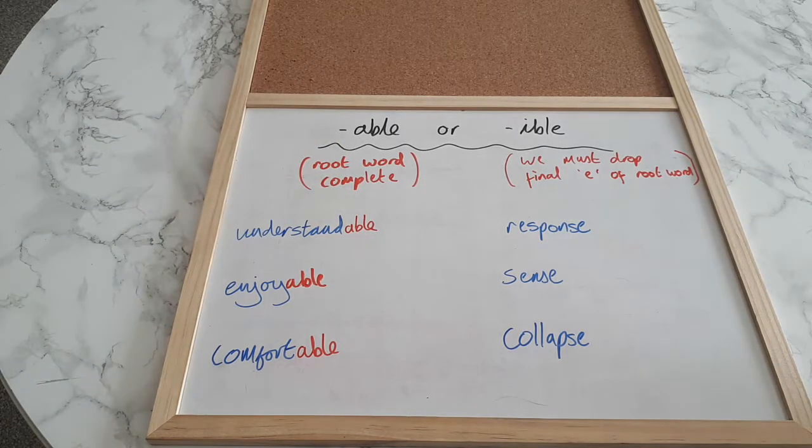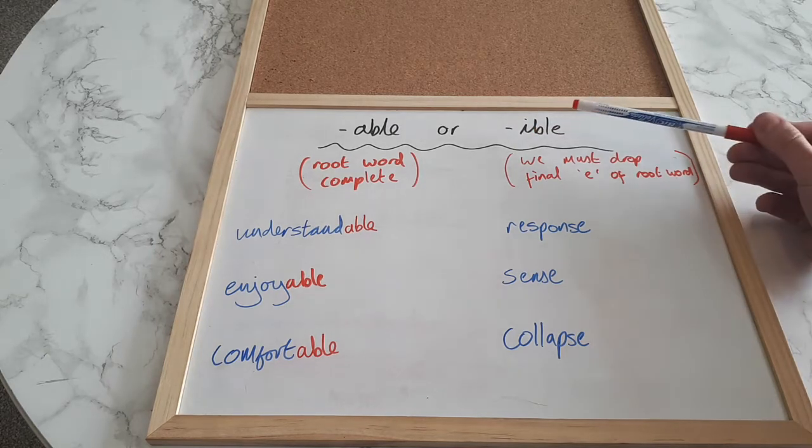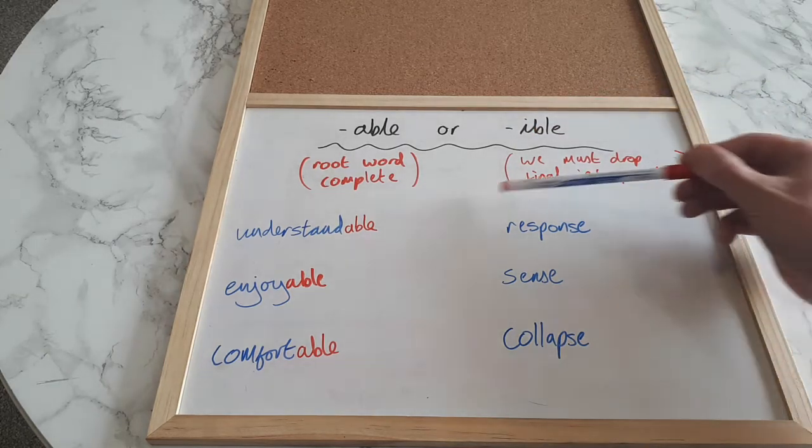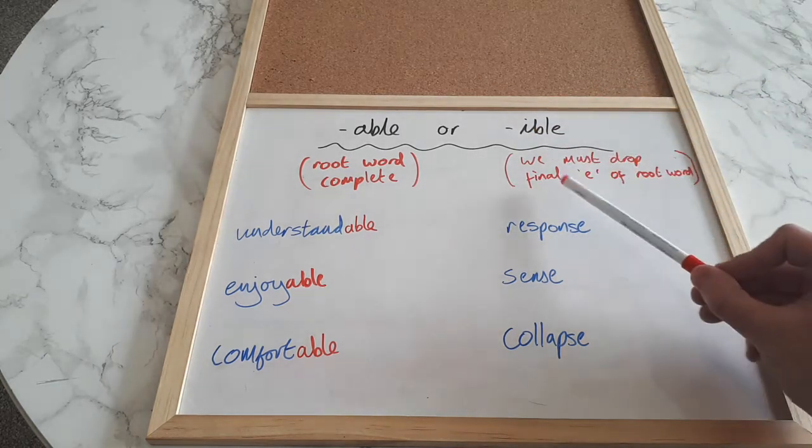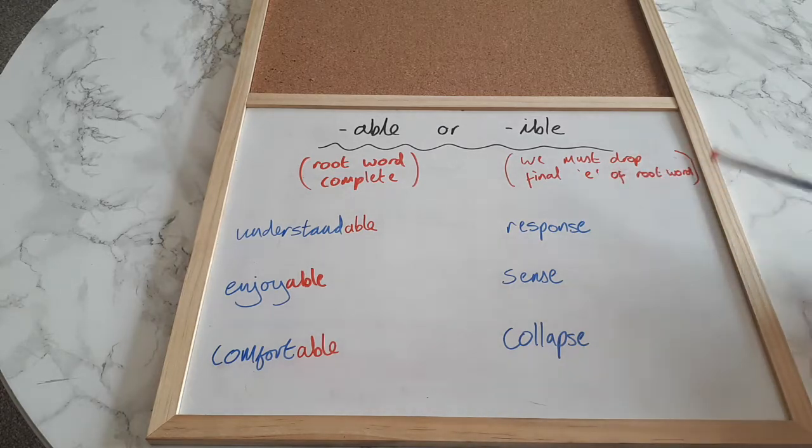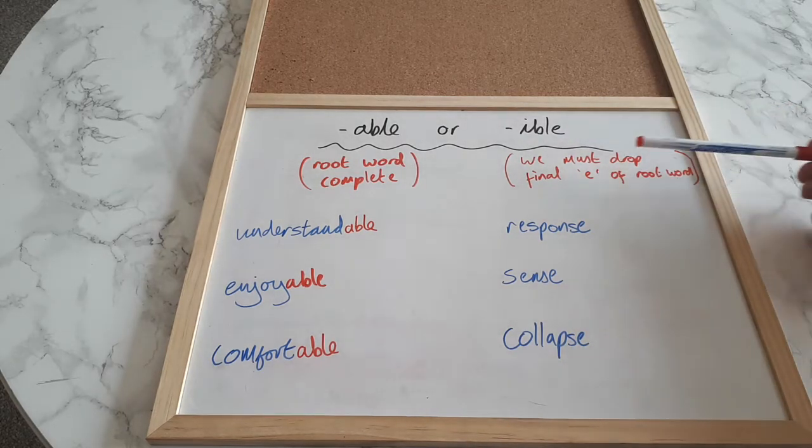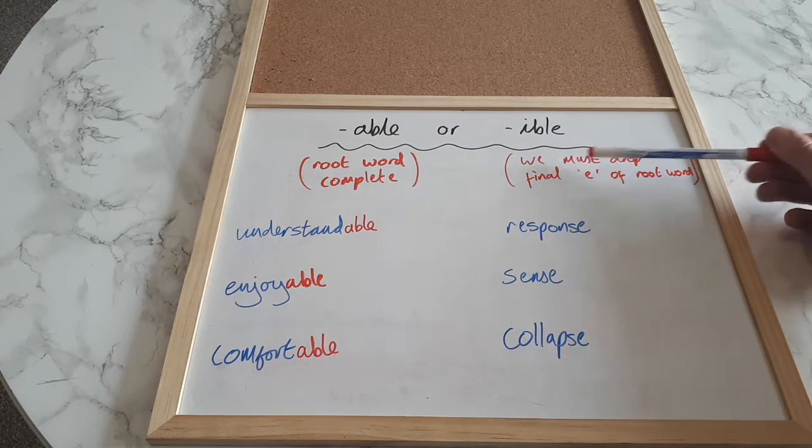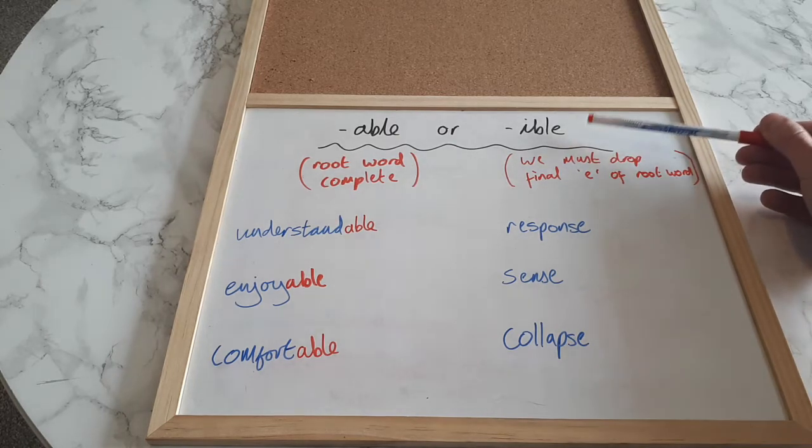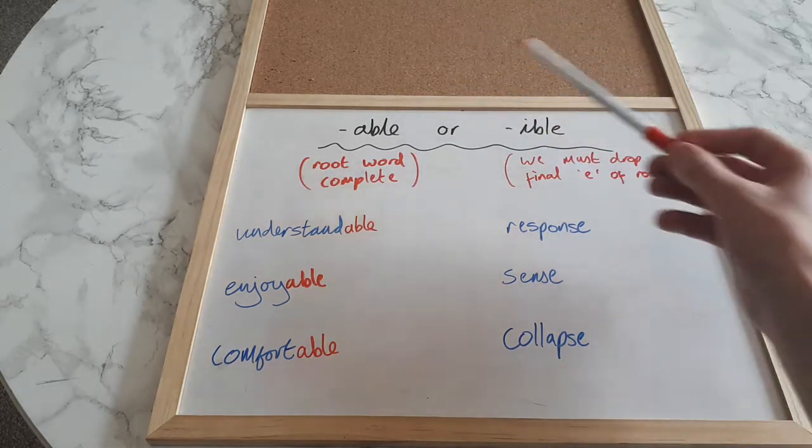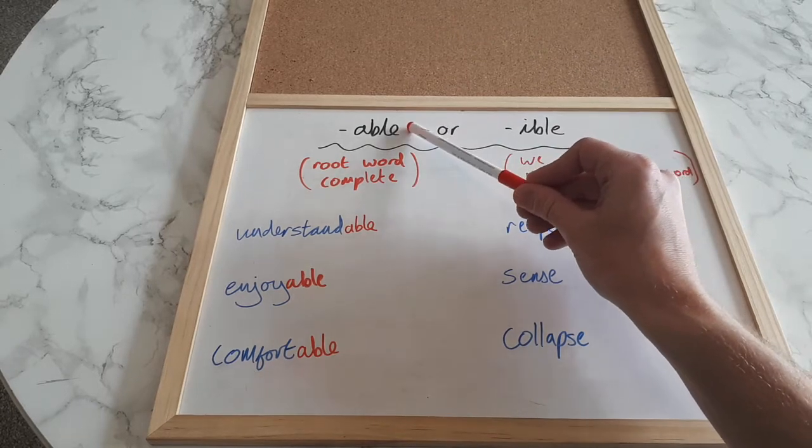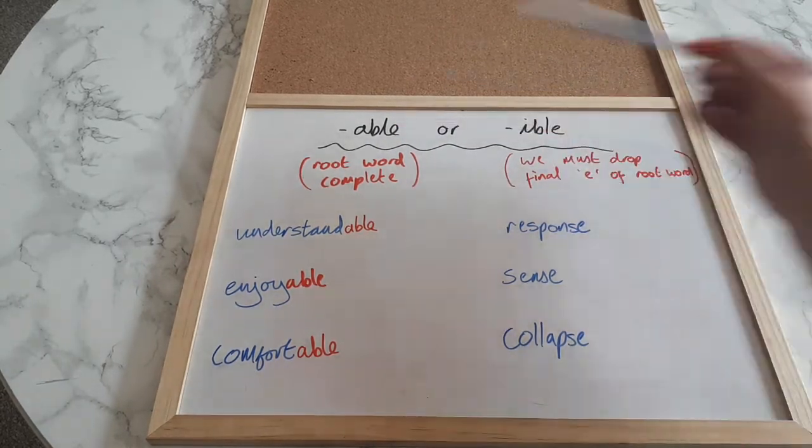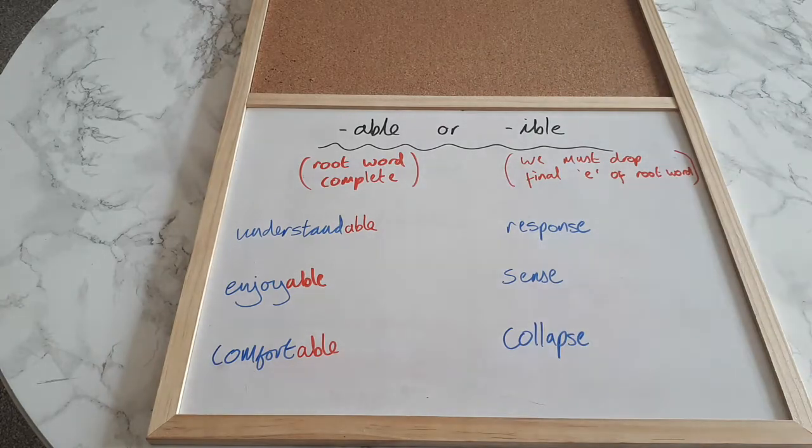Now -ible is slightly different. If we need the -ible ending then we do have to change our root word ever so slightly. We must drop the final e of a root word. Usually -ible is used for a word which ends in e. There are less words with -ible than -able. There are about 800 words in the English language that end with -able and there's only about 200. So -able is more common but occasionally we do need -ible.